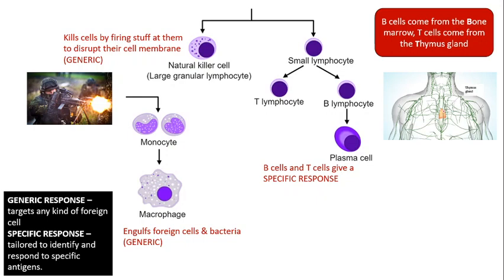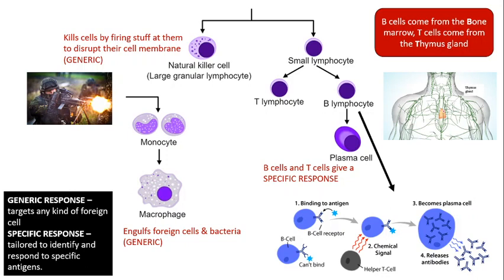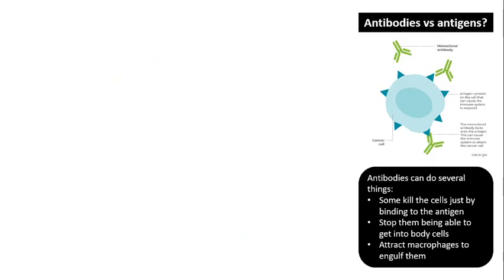B and T cells are both part of our specific response against viruses and bacteria. Looking at B cells: they have receptors on their surface, and when they bind to a particular antigen — which might signal, for example, that the flu virus has got into the bloodstream — the B cells will then become a plasma cell, which means they'll then be able to release lots of antibodies for the flu virus into the bloodstream. That's part of our specific response to one virus.